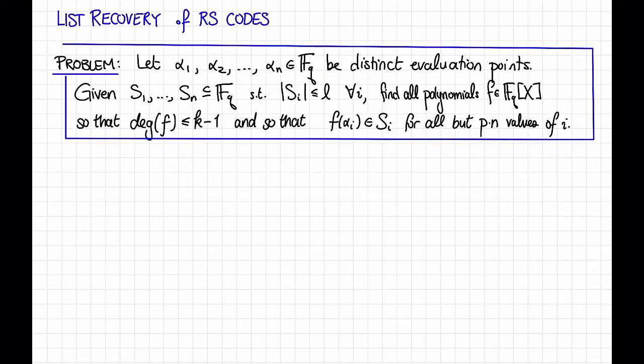Remember that in the list recovery problem, we were given a bunch of lists S1 through Sn of size at most little l, and we wanted to find all of the code words in some code so that the ith symbol of the code word lives in the ith list for most of the lists. If we translate that to Reed-Solomon codes, it says that we should have a bunch of lists so that the number of low-degree polynomials whose evaluations at particular points lie in the corresponding list for most of the lists is not too large.